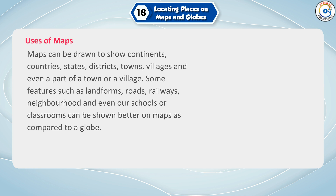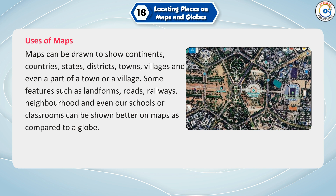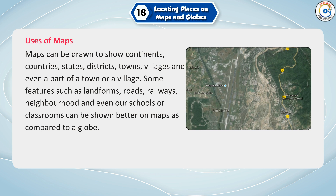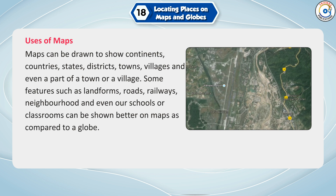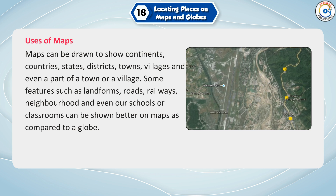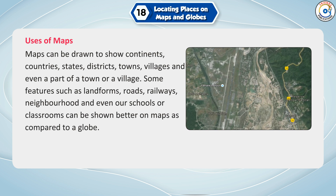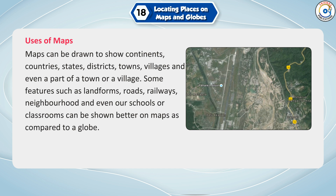Uses of Maps: Maps can be drawn to show continents, countries, states, districts, towns, villages and even a part of a town or a village. Some features such as landforms, roads, railways, neighbourhood and even our schools or classrooms can be shown better on maps as compared to a globe.